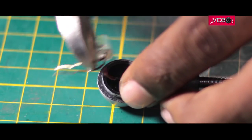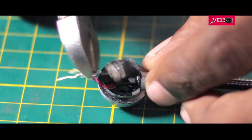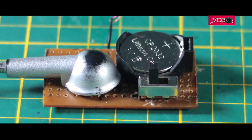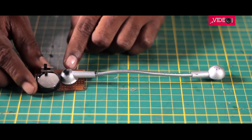I also cut the excess leads of the LED and positioned it in its place. Then a hole was drilled and the wires from the LED were soldered to the battery and the switch. The connections are fairly simple. Switch on the lights for a final check.